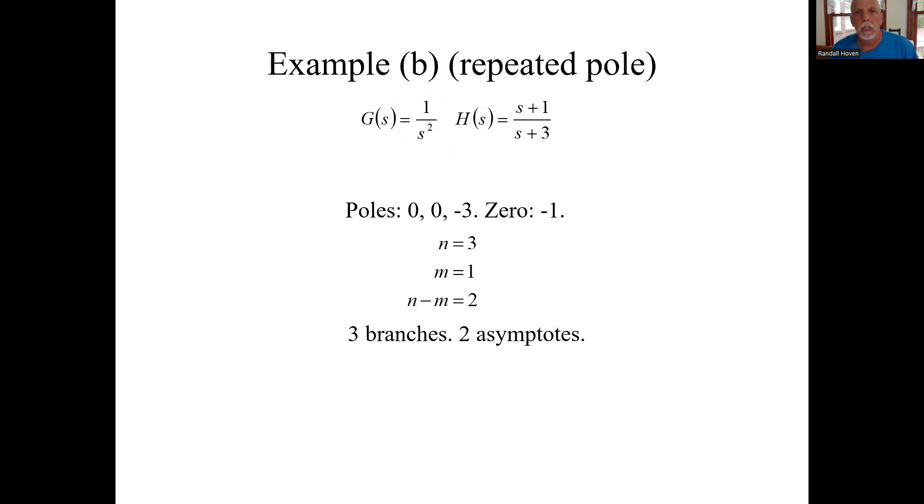Here's the g, here's the h, l is the product of both of these. So l's poles will be the combination of these poles. Zero, zero and minus three. So a double pole at the origin. And the only zero is at minus one. So n, the number of poles is three. m is one, the number of zeros. N minus m is two. And from that we know we're going to get three branches of root locus. And n minus m is two is how many asymptotes.